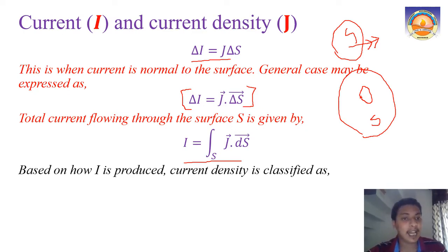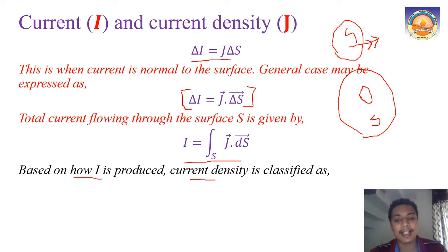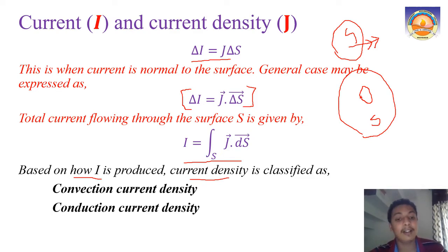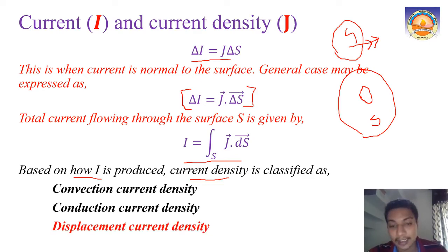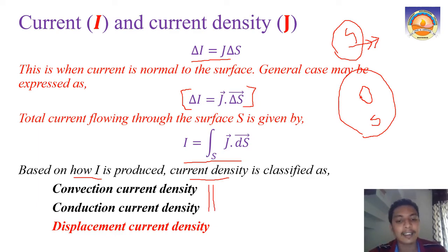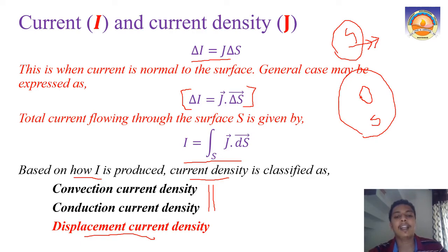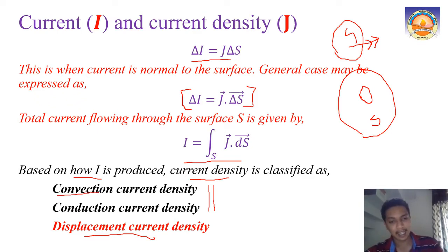Current density is also classified depending on the material it flows through and how the current is produced. There are three types of current or current densities: convection current density, conduction current density, and displacement current density. Displacement current density will be dealt with in connection with dielectrics and polarization. For now, let us focus on convection and conduction currents in conductors.